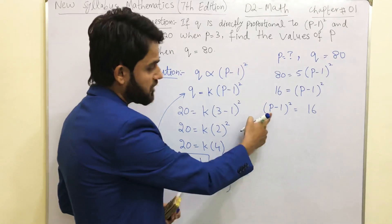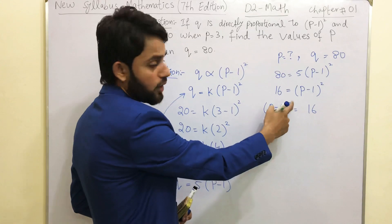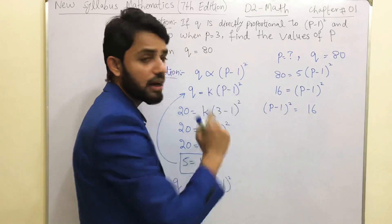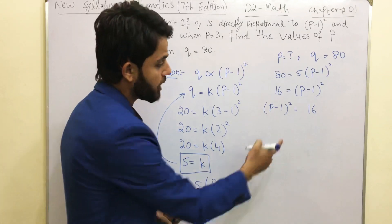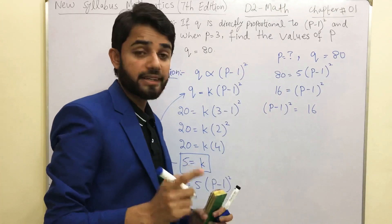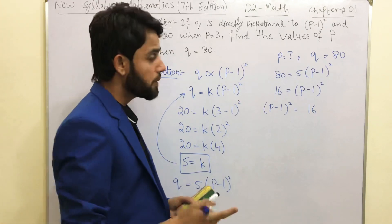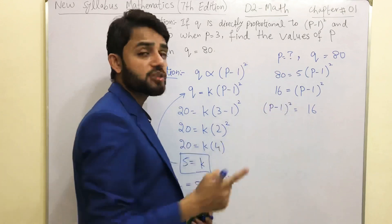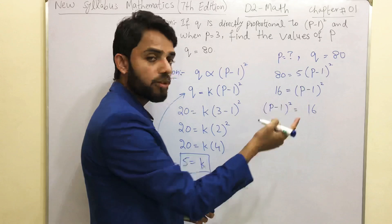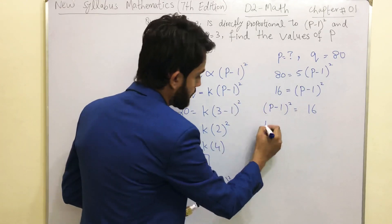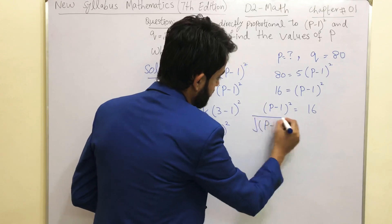We need to find out the value of P, and we know that there is a square on this bracket. We need to get rid of this square in order to get the value of P. So there is only one possibility: you can remove the square by taking the square root on both sides of the equation. Why we are taking the square root? Because square root and square, these two are opposite to each other. Once you have square and you take the square root on both sides, they will cancel each other.